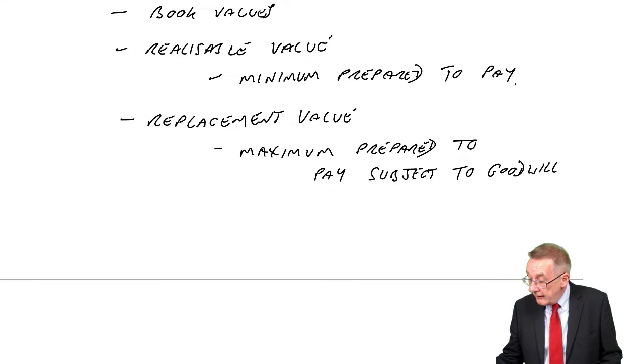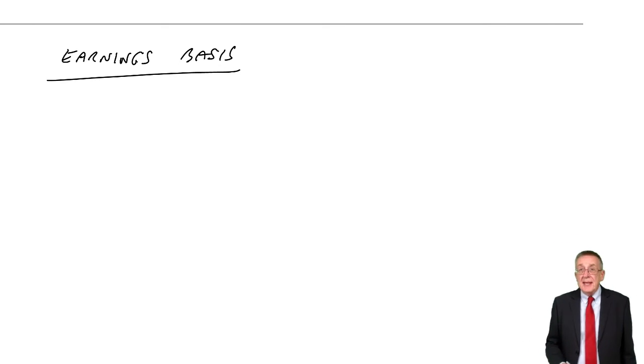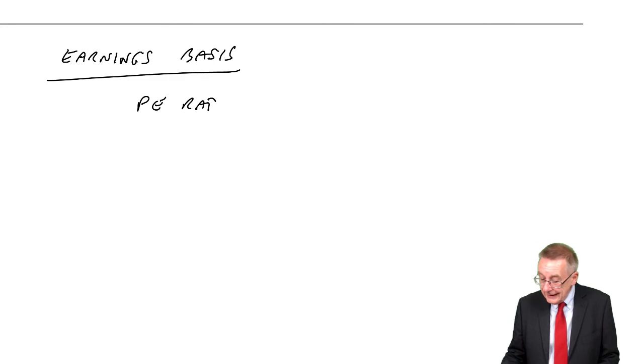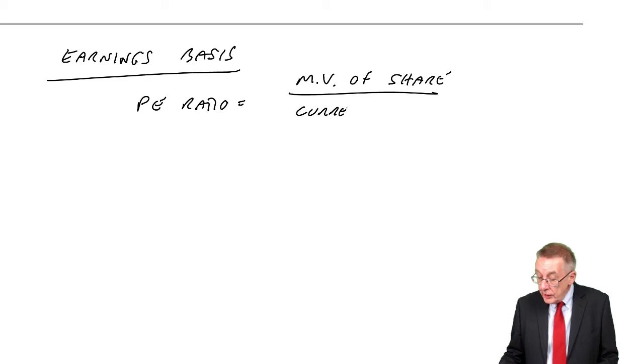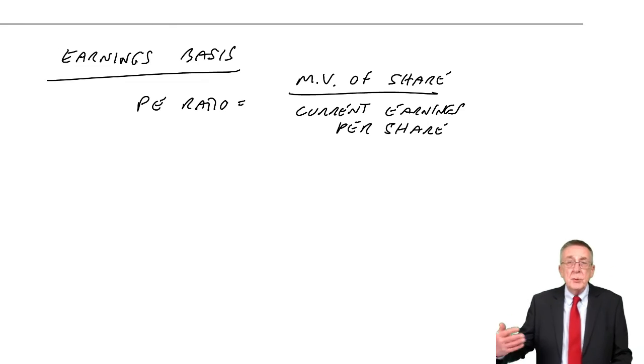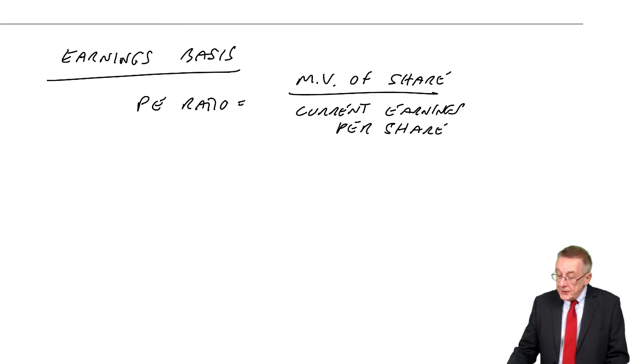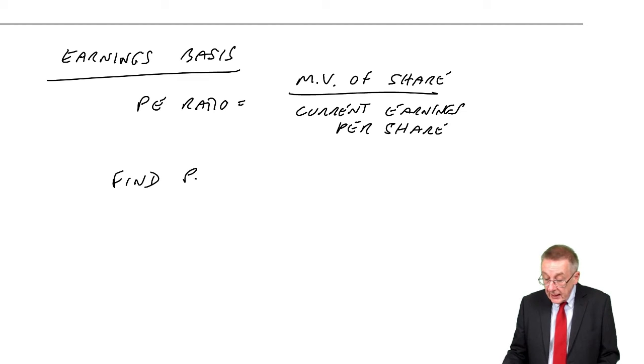The other thing, though, very important and very common in real life, is what we call the earnings basis. In an earlier chapter, I explained what we meant by the P-E ratio. The P-E ratio is the market value of the shares divided by the current earnings per share. Well, I know what the current earnings are of the business. I can find them out. I said earlier, the problem is estimating future dividend growth rate. But current earnings, we know what they are.